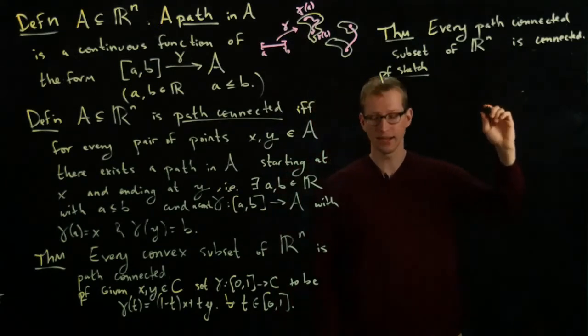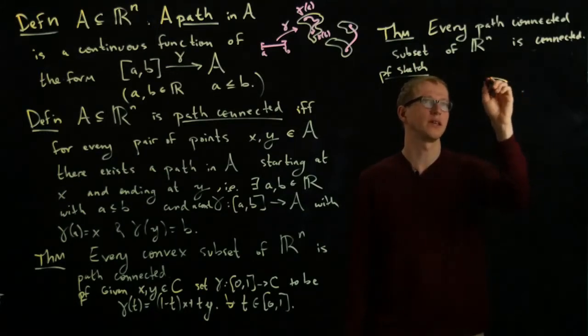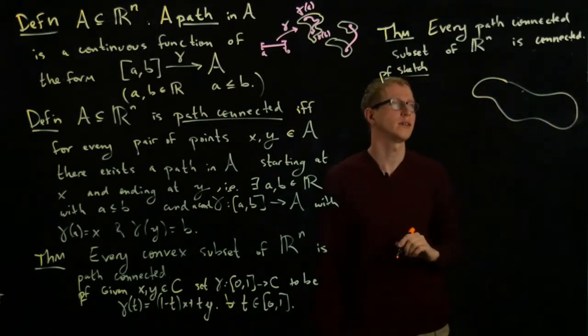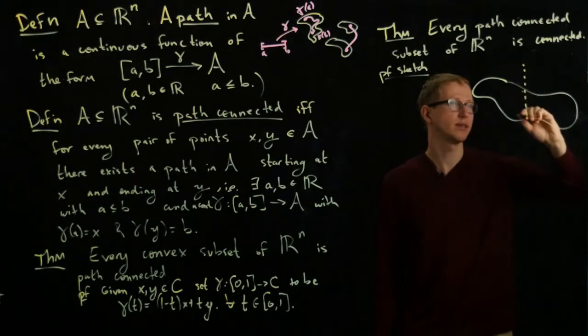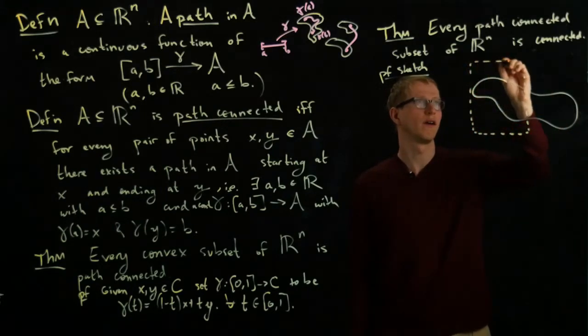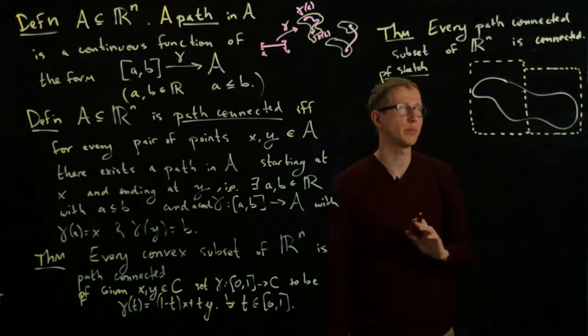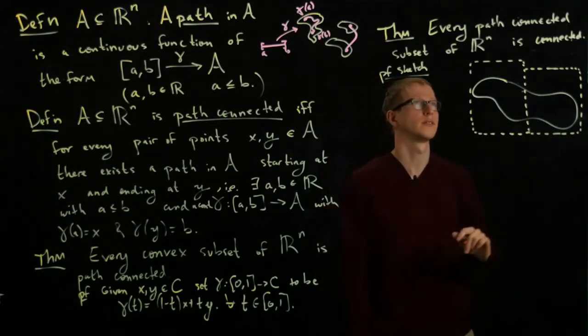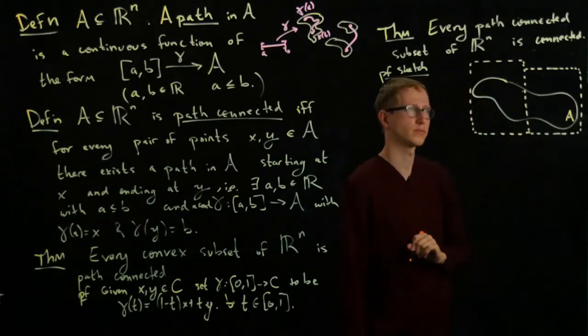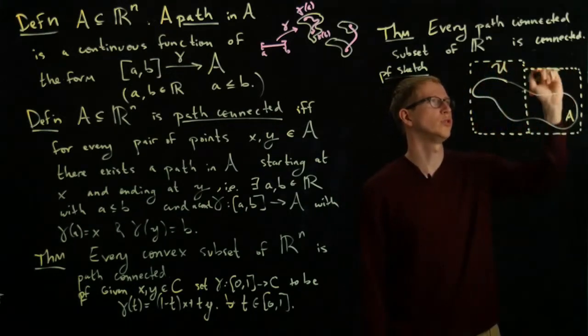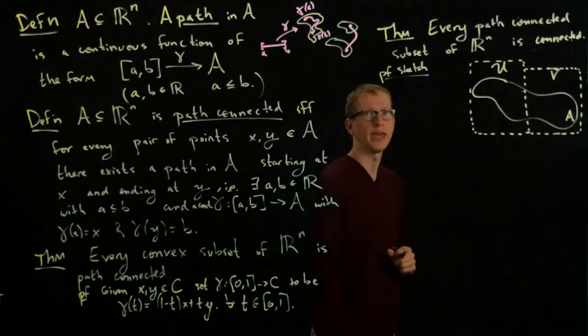First, suppose that I had a subset A. Let's say A looks something like this. And suppose that, to the contrary, there exists open sets that are disjoint and separate the set A. So let's say this is our subset A of Rn. And we have two open sets, U and V, whose intersection with A gives us disjoint open sets that separate A into two parts.